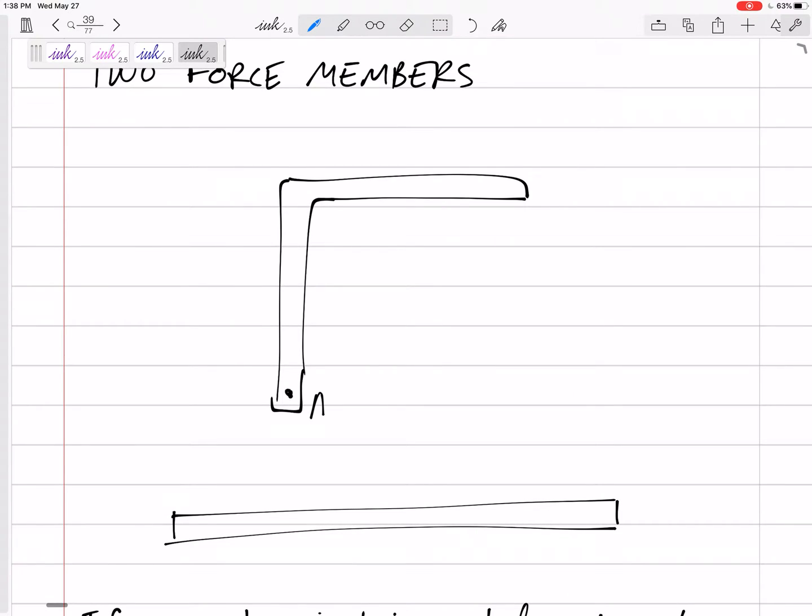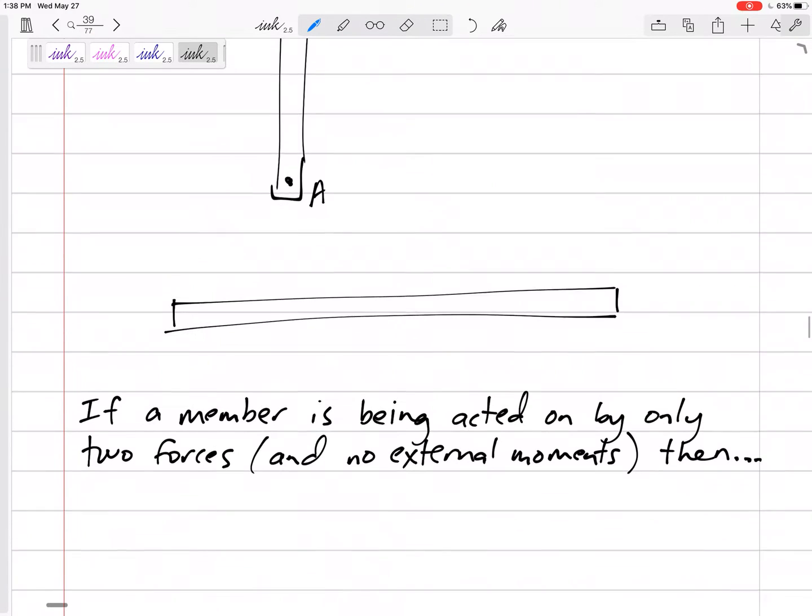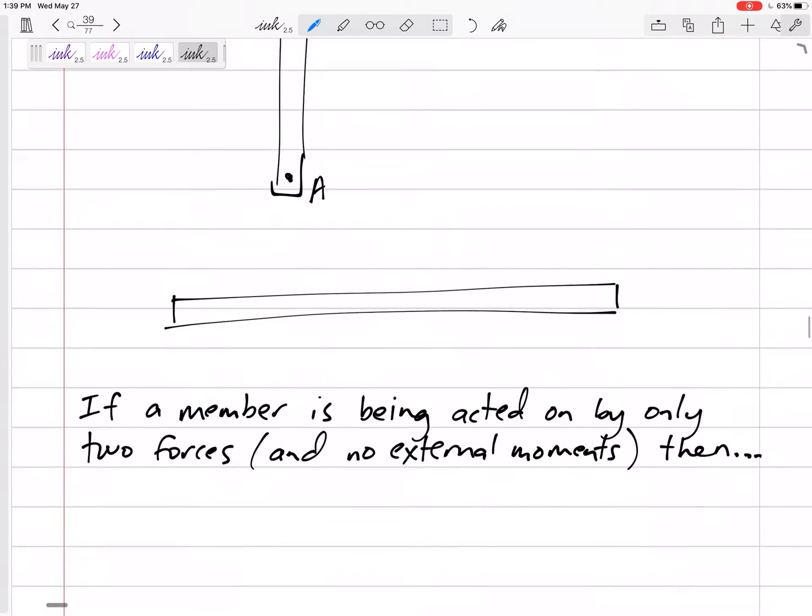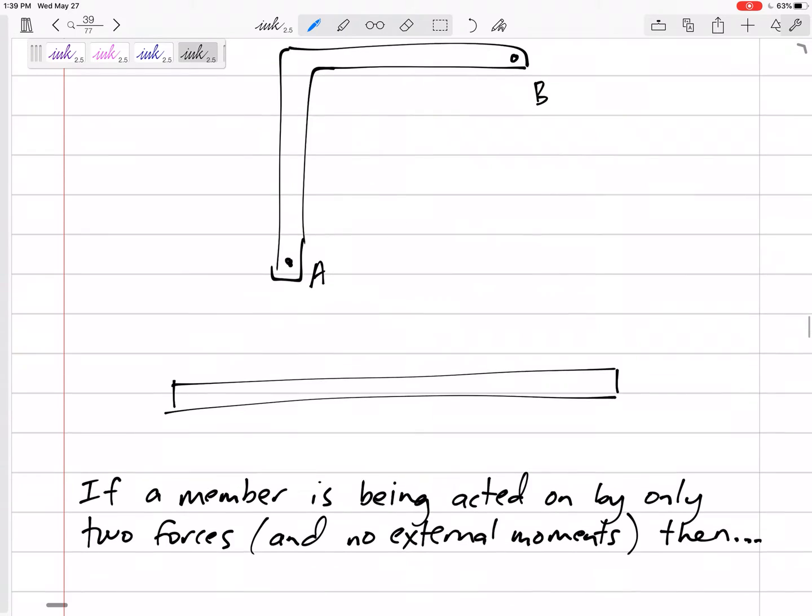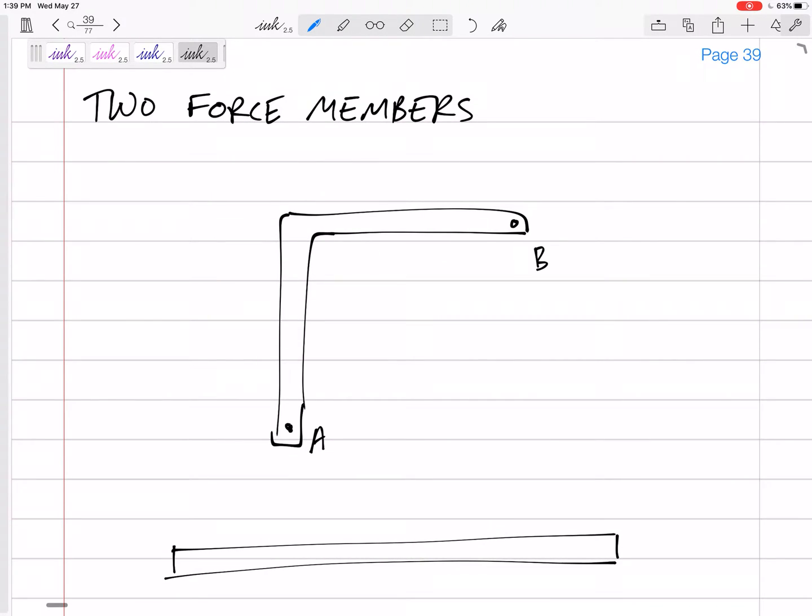Let's say we have a force at A and a force at B. What could those forces look like? If we have a force at A and a force at B and no other forces anywhere else, if a member is only acted on by two forces and no external moments and it is in equilibrium, then the sum of the forces in X has to still be equal to zero, the sum of the forces in Y has to still be equal to zero, the sum of the moments has to still be equal to zero.